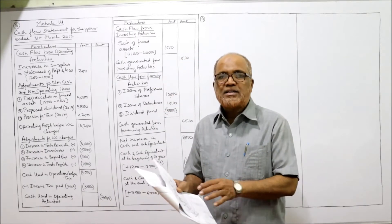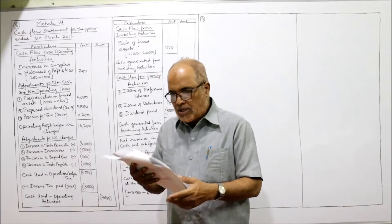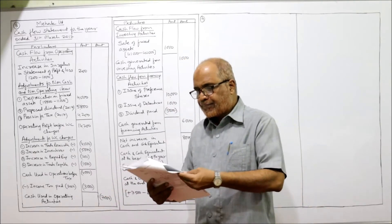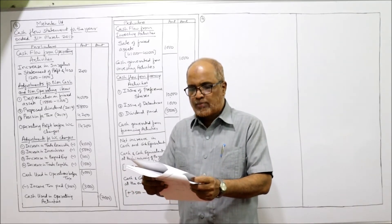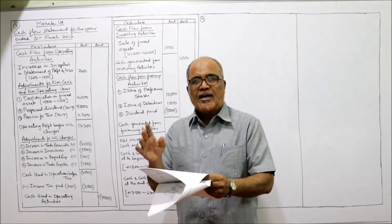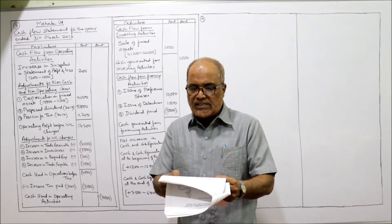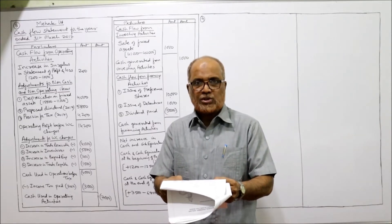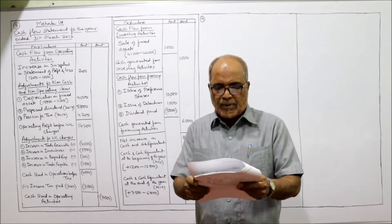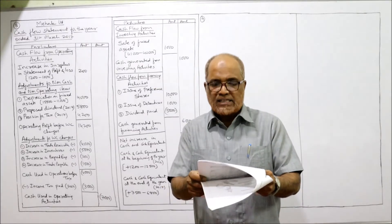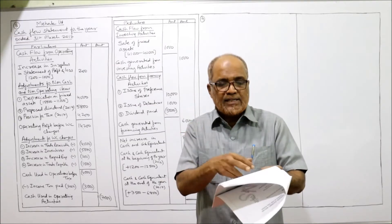I expect everybody has the printout of the problems which I have given in the link under my description. In problem eight, we are given the summarized balance sheet of Meheka Limited as on 31st March 2017. Current year is 2017, last year is 2016. Share capital: last year 40,000, current year 50,000 — issue of shares will be taken in financing activity. Reserves and surplus: last year 3,000, current year 3,200.